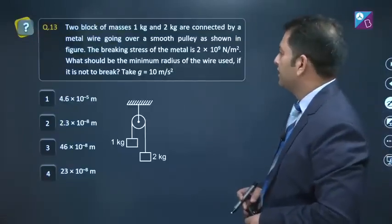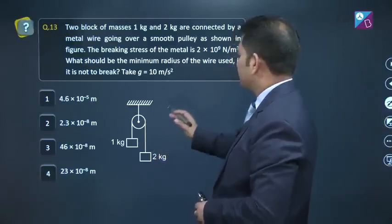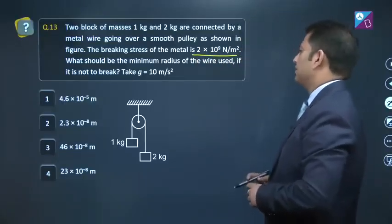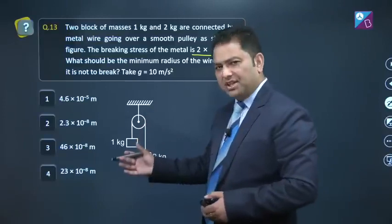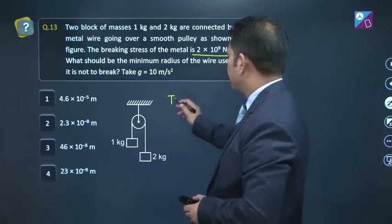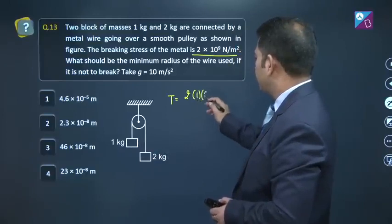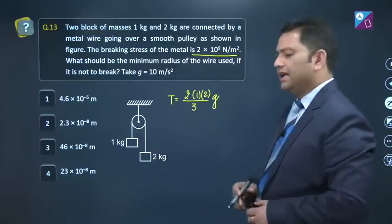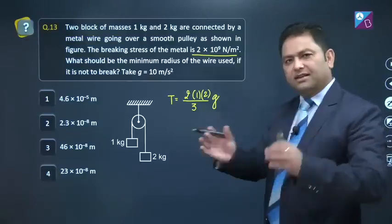Question number 13, two blocks of masses 1 kg and 2 kg are connected by metal wire going through a smooth pulley, and the wire has this breaking stress. What should be the minimum radius of the wire used if it is not to break? Let me directly write tension: that is twice of m1 m2, that will be 1 multiplied by 2 divided by m1 plus m2, that is 3 multiplied by g. Tension is 2m1 m2 g divided by m1 plus m2.